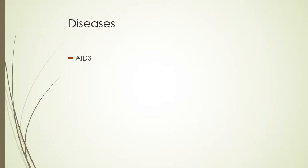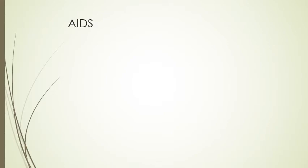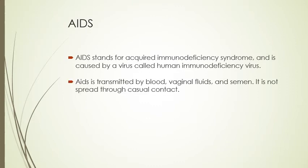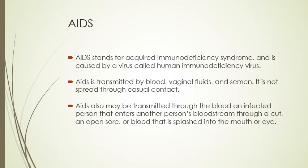Different diseases we'll discuss include AIDS, Hepatitis B, TB, MRSA, C. diff, and nosocomial infections. AIDS stands for Acquired Immunodeficiency Syndrome and is caused by the Human Immunodeficiency Virus, also known as HIV. AIDS is transmitted by blood, vaginal fluids, and semen — it is not spread through casual contact. It may also be transmitted when the blood of an infected person enters another person's bloodstream through a cut, open sore, or blood splashed into the mouth or eye.